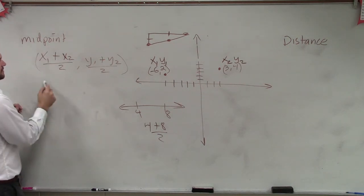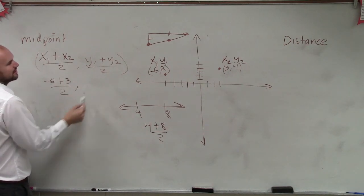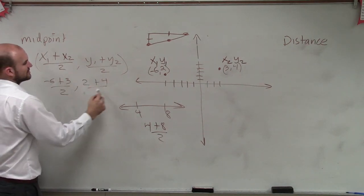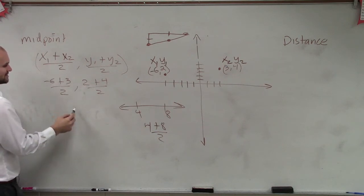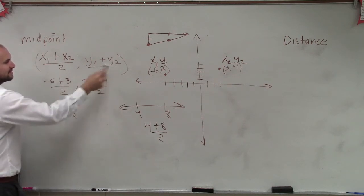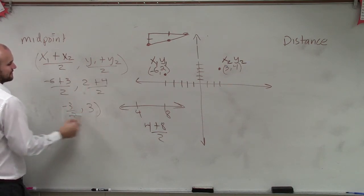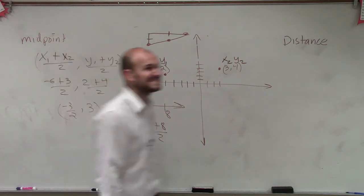Now let's figure it out. Negative 6 plus 3 divided by 2, comma, 2 plus 4 divided by 2. This becomes negative 3 halves, this becomes 6, comma 3. That's the midpoint.